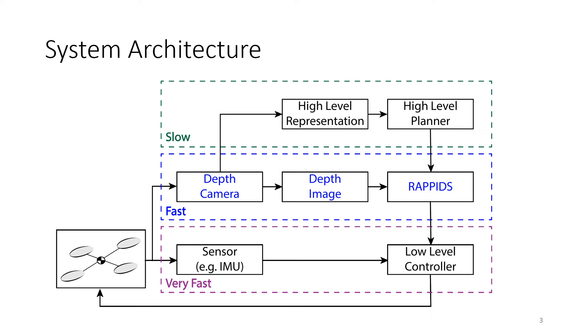Our planner, the RAPIDS algorithm, will then use a single depth image to find these collision-free trajectories that move us towards that high-level goal, and then the low-level controller will actually track those trajectories as we update them with our planner.